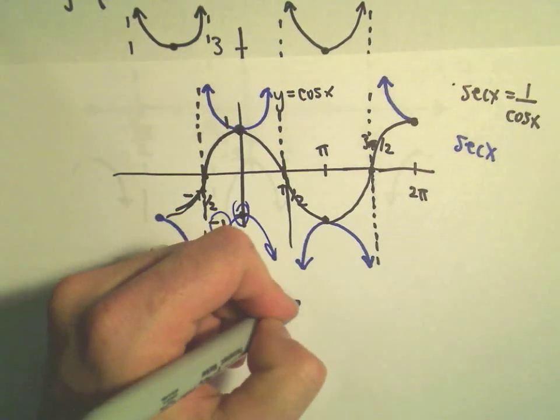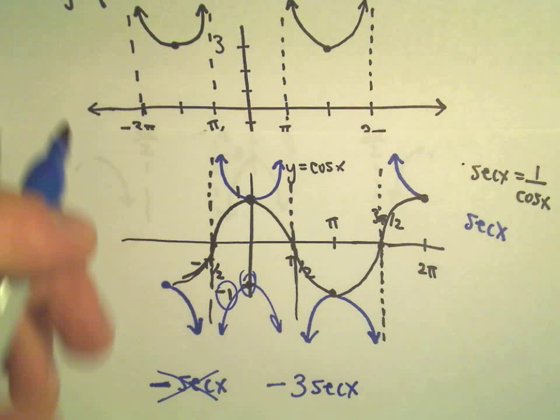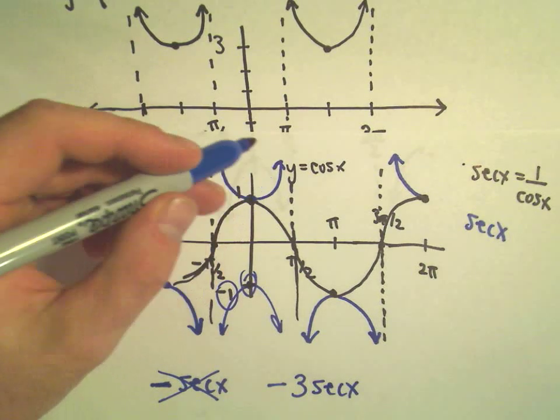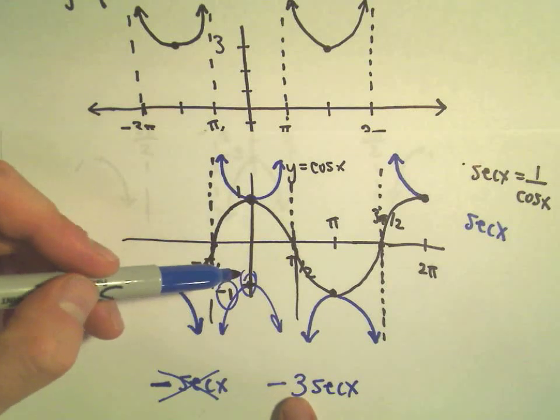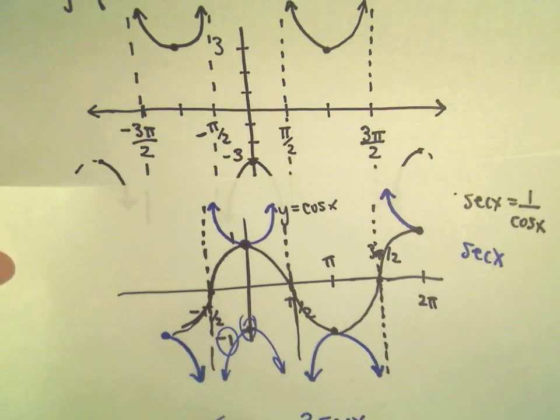I think if we use negative 3 secant of x though, that will do everything that we want. It'll take this original portion, for example this little top portion. The negative will reflect it about the x-axis. And then if you multiply it by 3, it's just multiplying the original y values by 3.